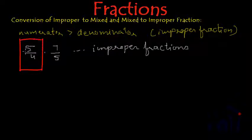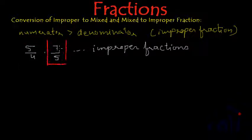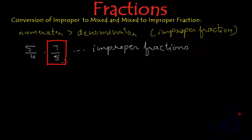In 5/4, the numerator is 5 and the denominator is 4, so the numerator is definitely greater than the denominator — making it an improper fraction. Similarly, 7/5 is also an improper fraction because its numerator is bigger than the denominator.